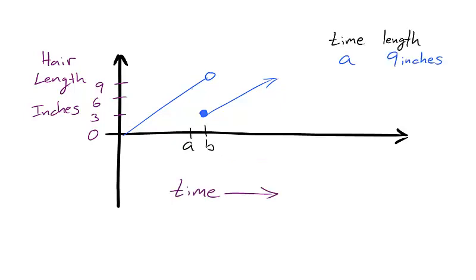Say at time a, my hair is 9 inches long, and at time b, I get a haircut and my hair is 3 inches long. Because a haircut introduces a jump discontinuity, there is no guarantee that my hair was ever 5 inches long between time a and b.